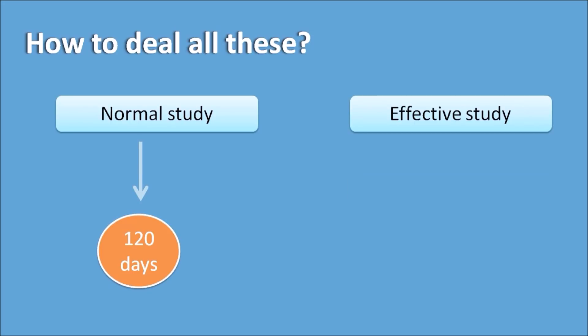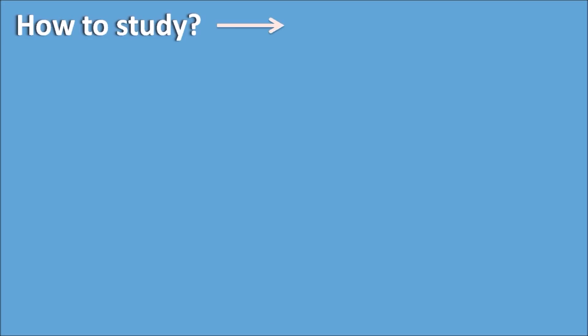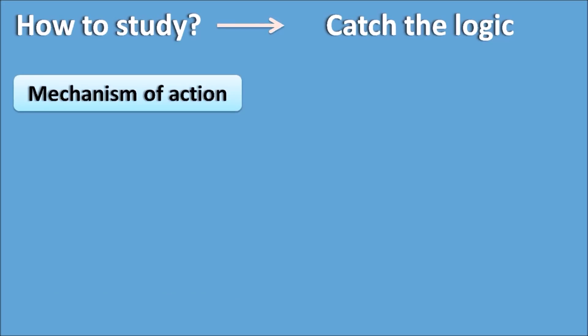Normal study takes around 120 days for completion of preparation, but an effective study will take less than 20 days. So within a short period you can study the entire pharmacology in a logical and systematic way. The first strategy is to catch the logic — wherever there is logic, there is significance in pharmacology.